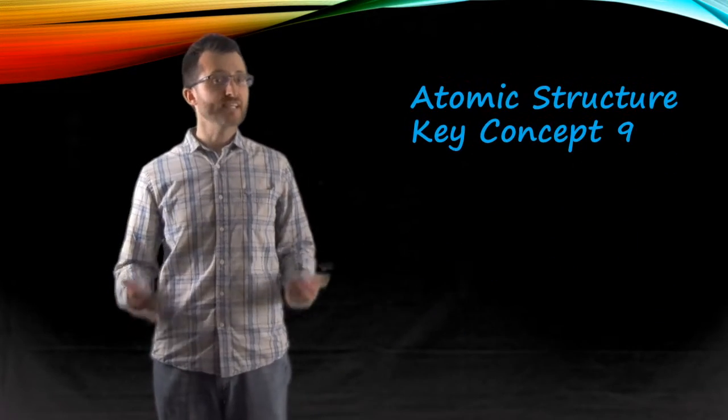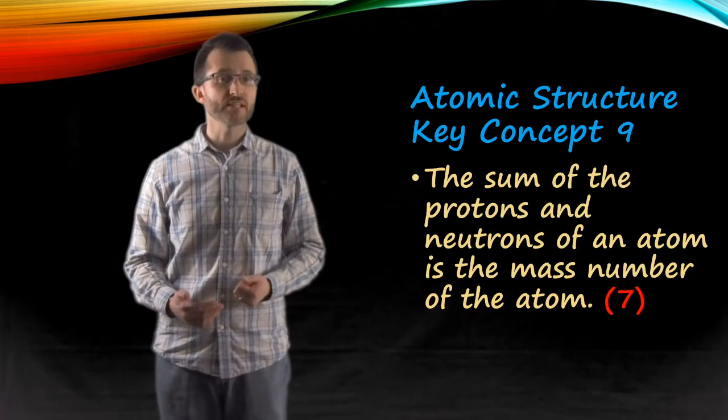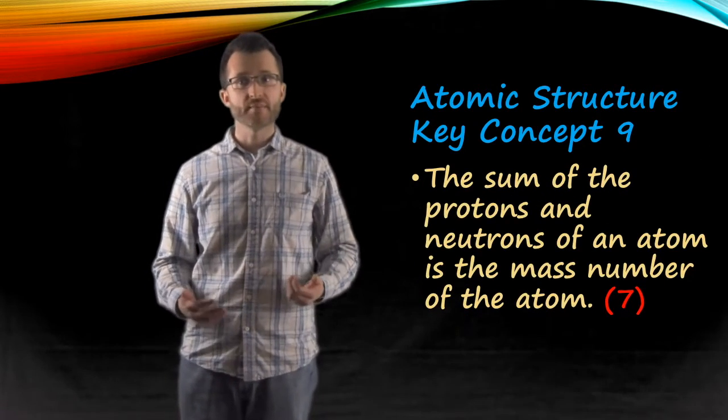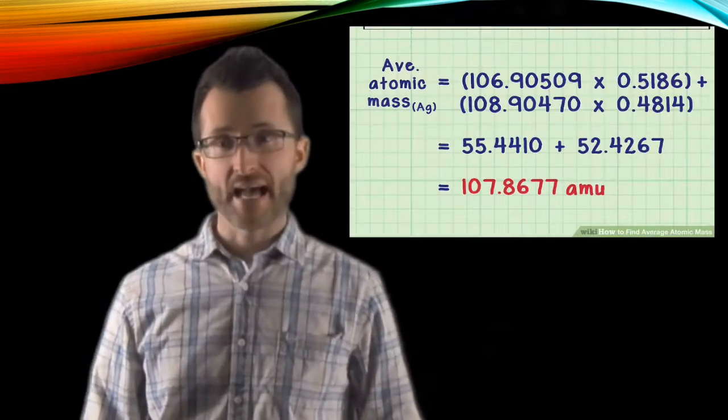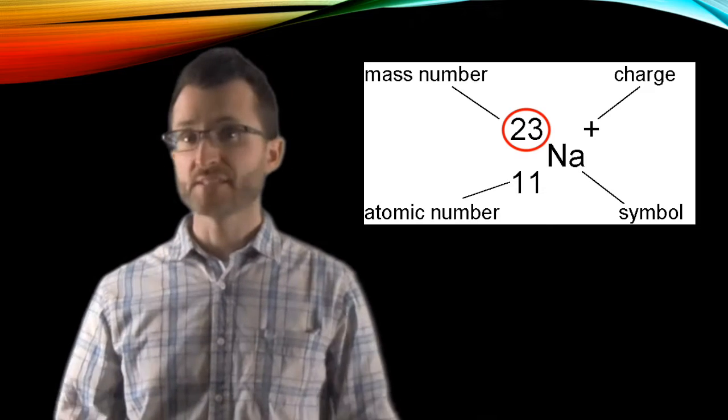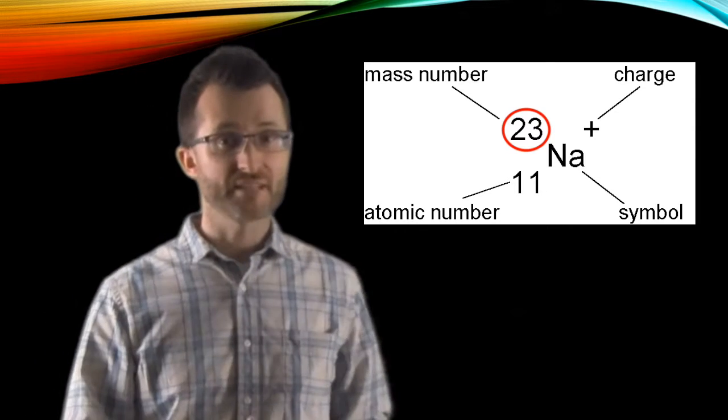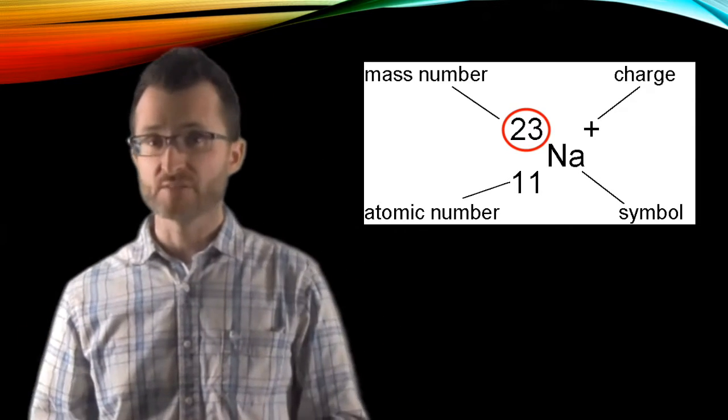Atomic structure, key concept nine. The sum of the protons and neutrons of an atom is the mass number of the atom. Unlike atomic mass, mass number is always a whole number. Now, as Mr. Fu said earlier, like atomic number, we have a count because we're just adding up whole particles. Protons and neutrons.